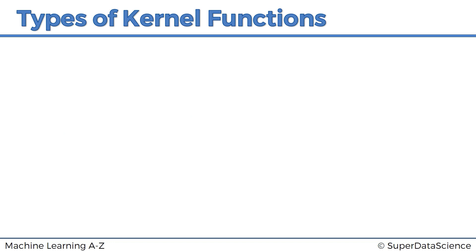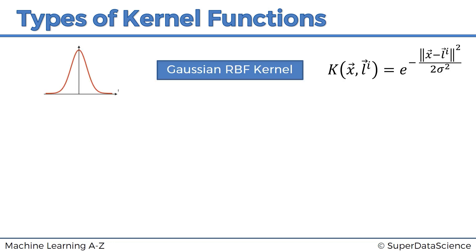The final thing you need to know about kernel SVM is that the radial basis function, also called the Gaussian function, is not the only kernel function used in this method. Let's have a look at a couple.